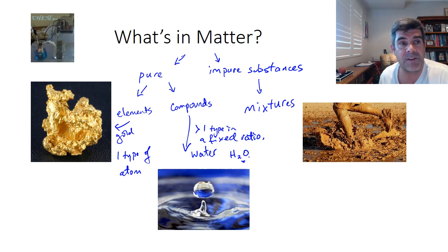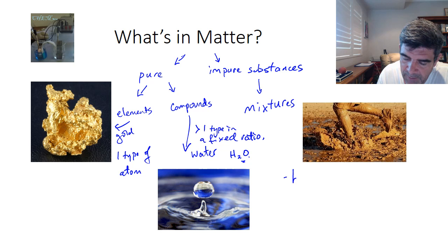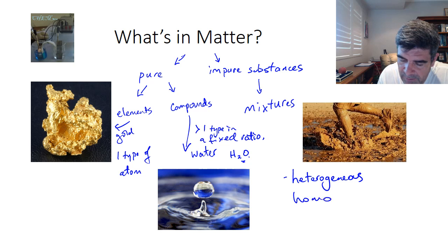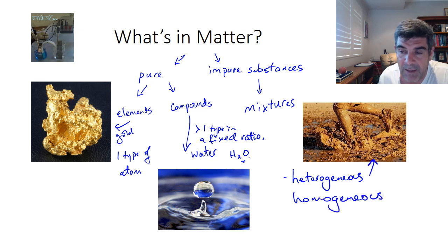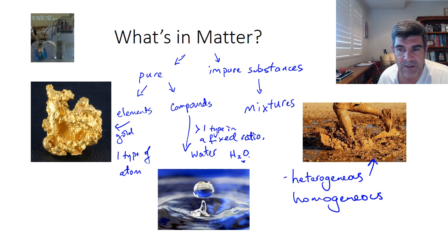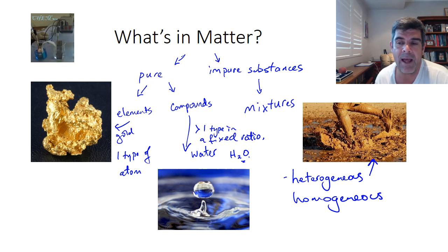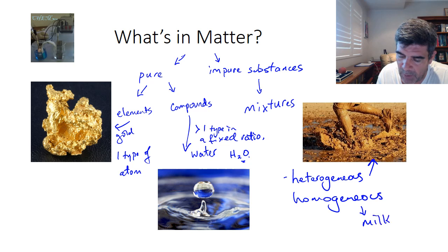For the purpose of this video, we're going to look at mixtures. Now mixtures can be one of two types: heterogeneous or homogeneous. The mud puddle that you're looking at here is really a heterogeneous mixture — a whole mix of things all distributed unequally throughout the mixture. Homogeneous mixtures tend to be things more like milk, but we'll get on to those in the next slide.